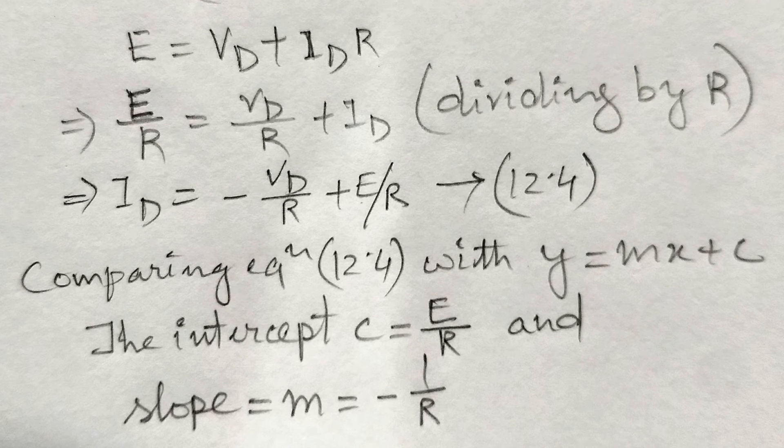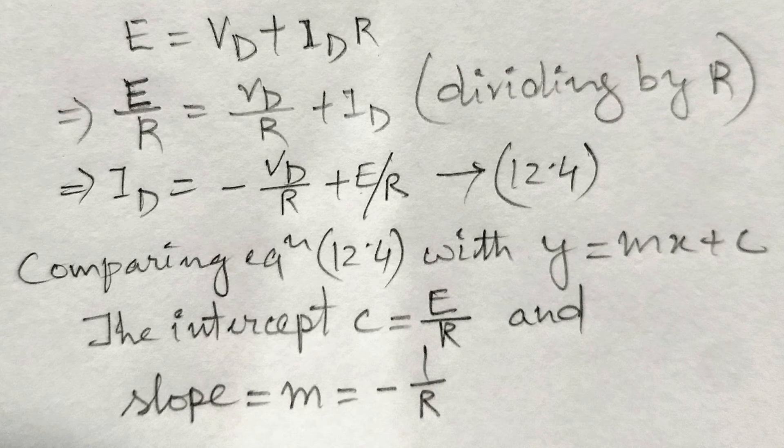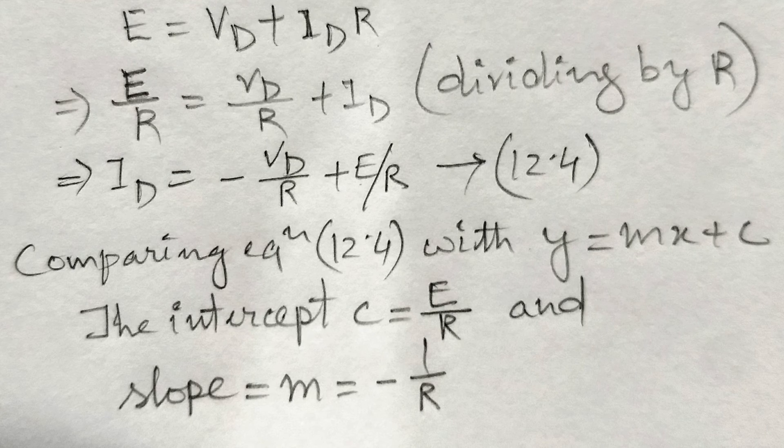M equal to minus 1 by R. So, by changing the load resistance R, the Q point is also changed.